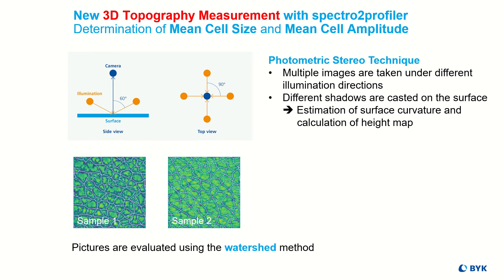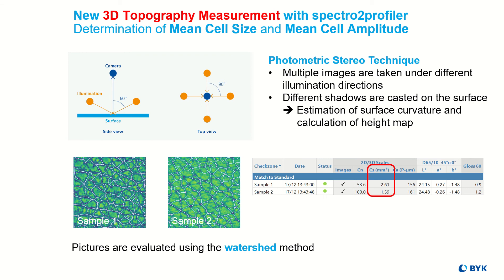The images taken by the camera are analyzed with the watershed method. You can simply imagine that the algorithm gradually floods the valleys, building rivers until hill areas are surrounded. These areas are defined as cells. The new parameter cell size clearly differentiates the two samples.